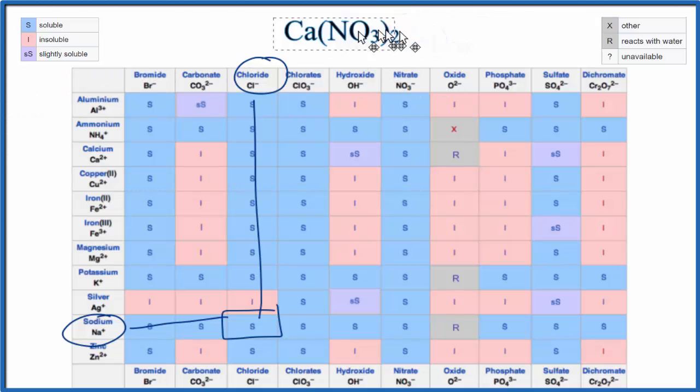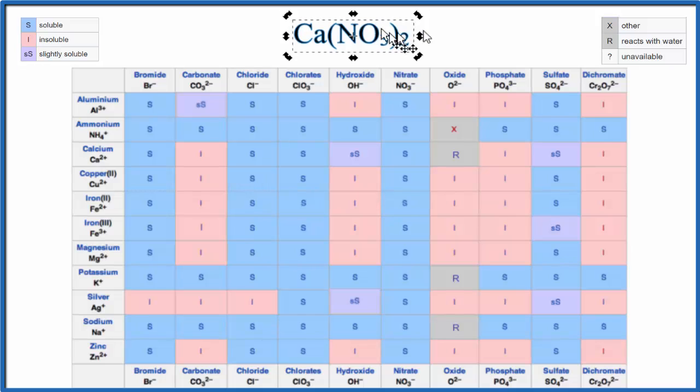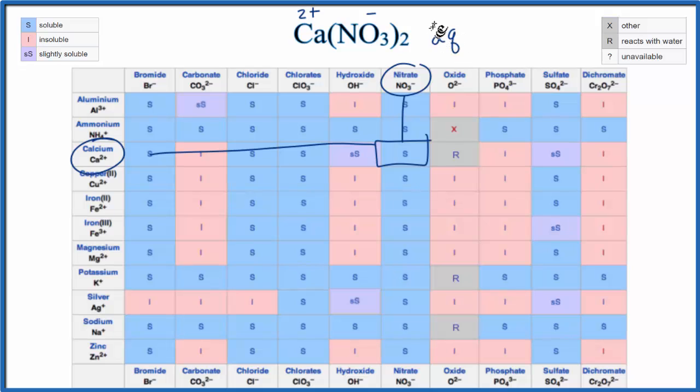Pause for a moment and give this one a try. See if calcium nitrate is soluble in water. Calcium has a two plus charge, and then the nitrate ion is one minus. We have two of them. When we look at our table, we find calcium here, we find nitrate, we go over and down, and you can see that S again. So calcium nitrate is soluble in water. We write aq for aqueous. It'll dissolve in water.